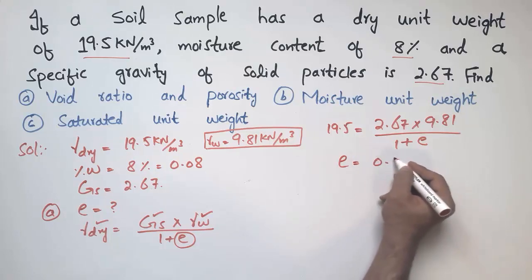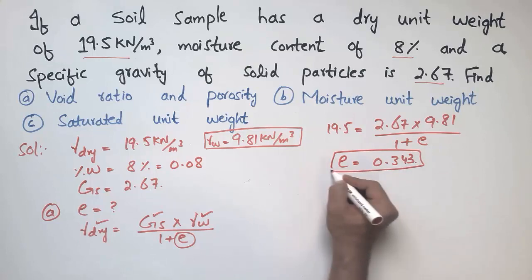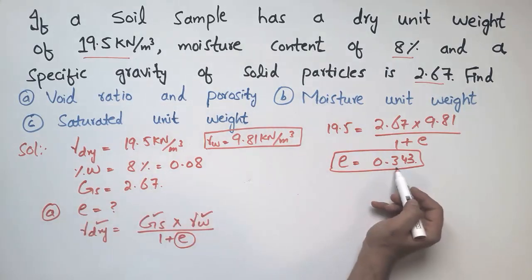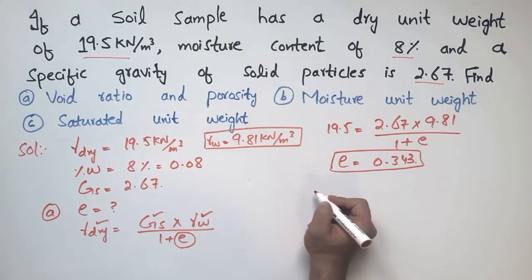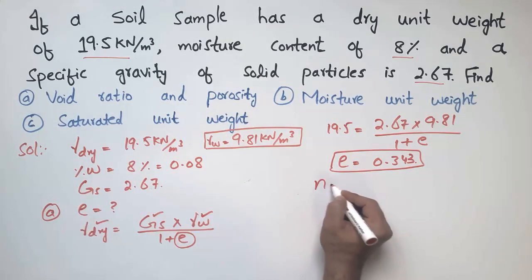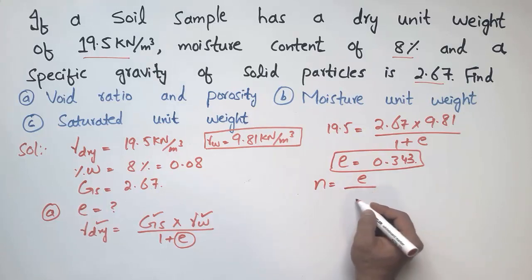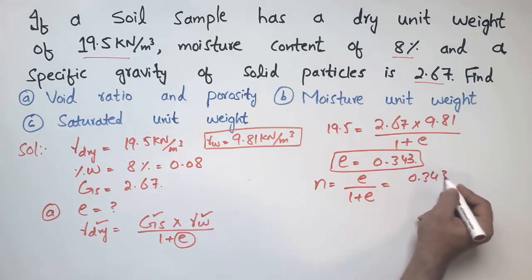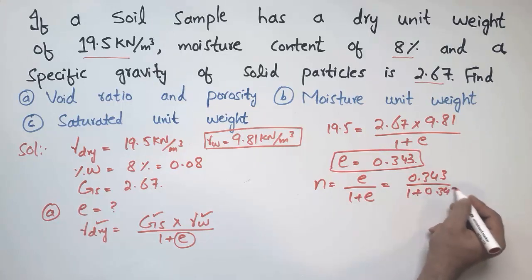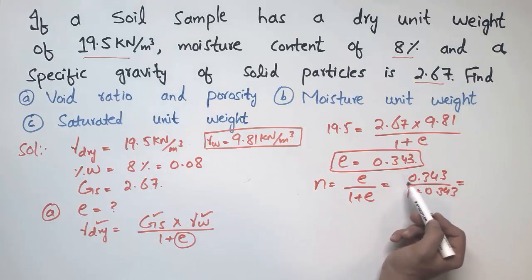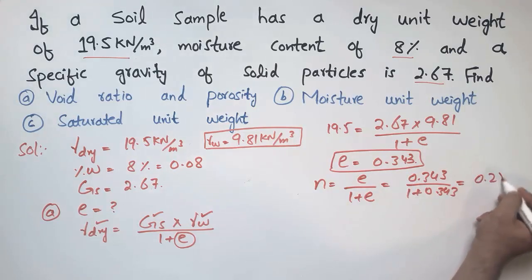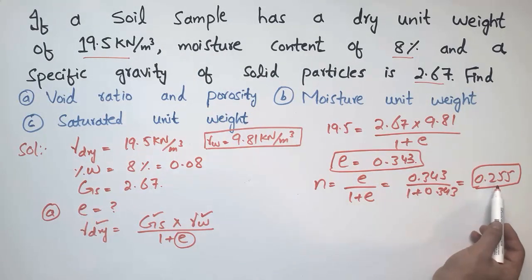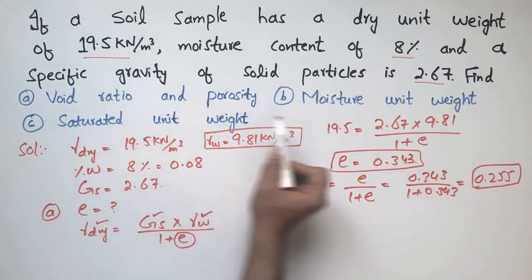The void ratio of this soil sample is 0.343 — this means that amount of void is present in the soil per unit volume of solids. Now for porosity: porosity and void ratio are related, so n = e / (1 + e) = 0.343 / (1 + 0.343) = 0.255. So the porosity of this soil sample is 0.255.